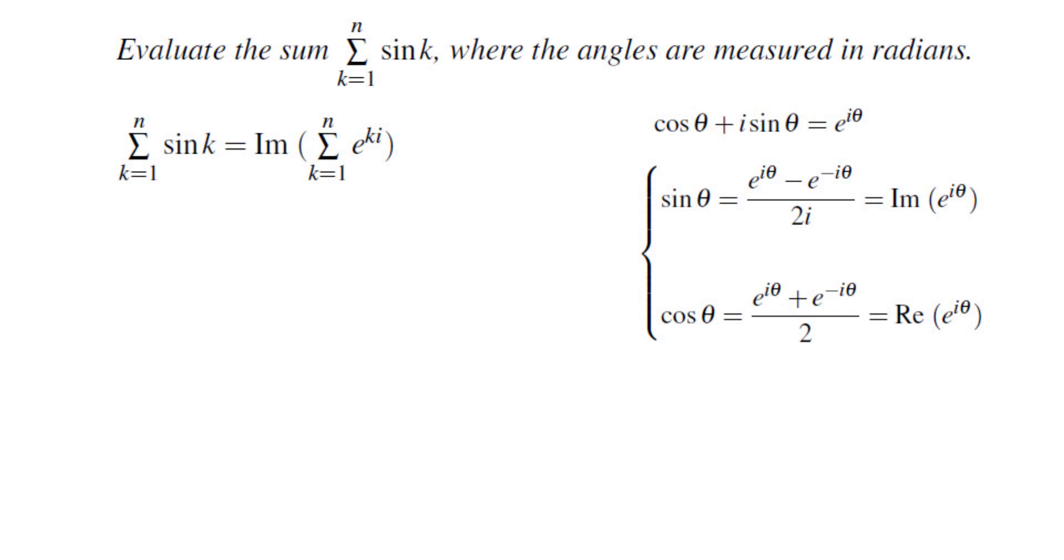So the sum of sine k would be the imaginary part of the sum of e to the power of i k. The way this would help is that sum of e to the power of i k is going to be a geometric sum with the common ratio of e to the power of i and the first term of e to the power of i as well.